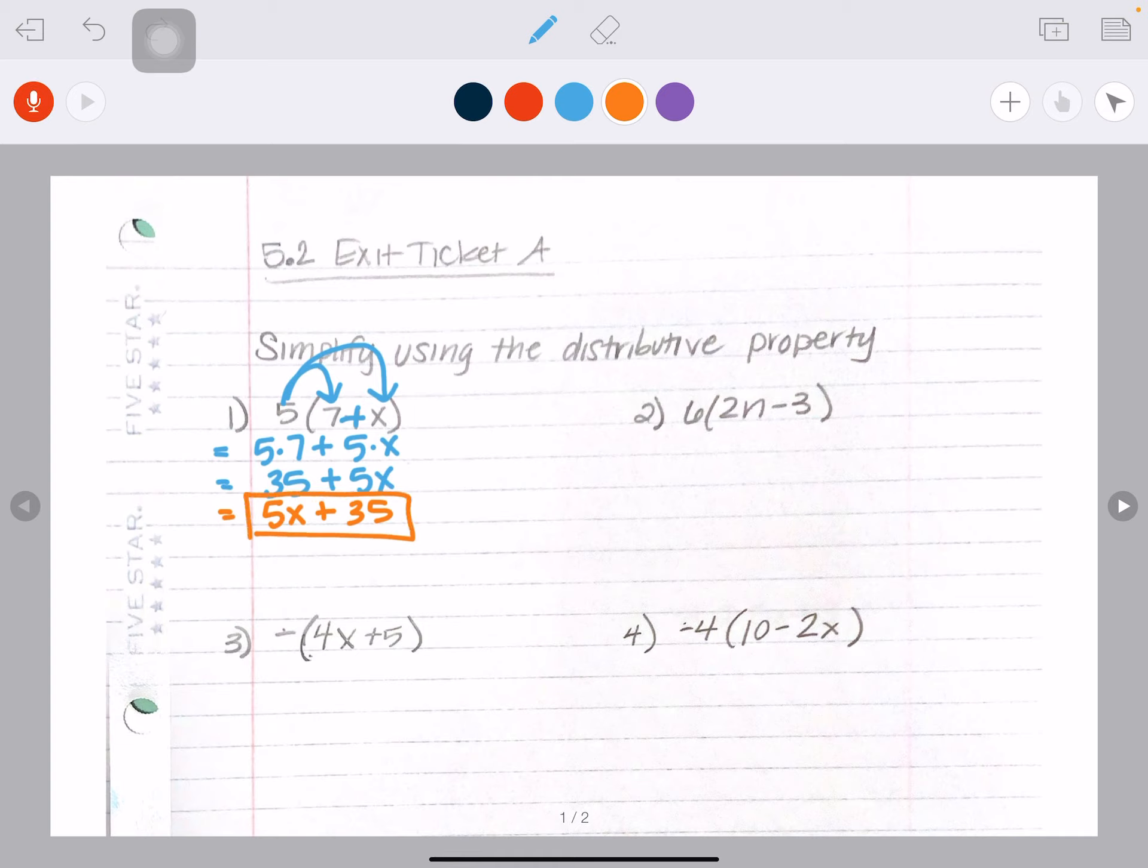So let's go ahead and try it again. This time I'm distributing a six to this two N. So that's really six times two times that N. And then look at my sign. I have a minus sign. So I'm going to say six times three. That's 18.